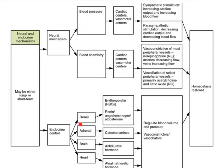For starters, our kidneys, by secreting renin, which leads to the renin-angiotensin mechanism, which can in turn trigger the release of aldosterone — but let's also not forget ADH. The kidneys also produce erythropoietin, which indirectly can increase blood volume as well.